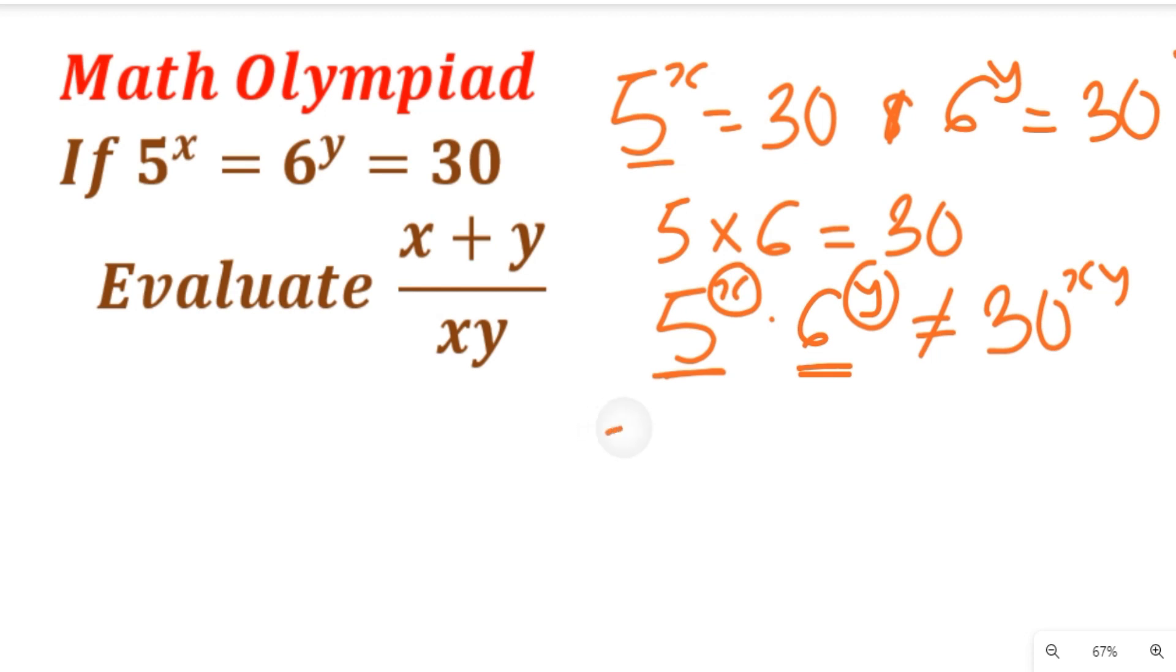Let's now assume that we have 5 to the power of xy and we say this is equal to 30 raised to power x. And if we also say that we have 6 to the power of xy, this is equal to 30 to the power of y.